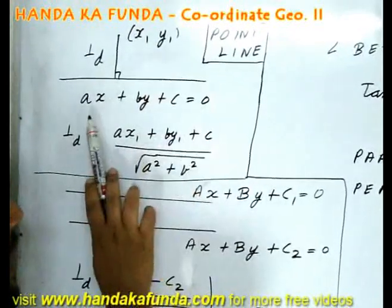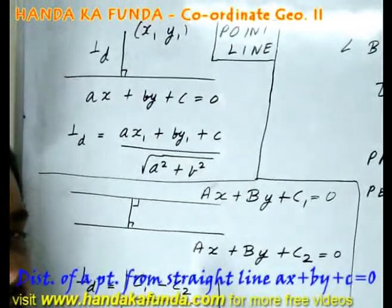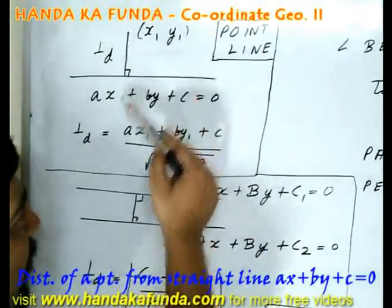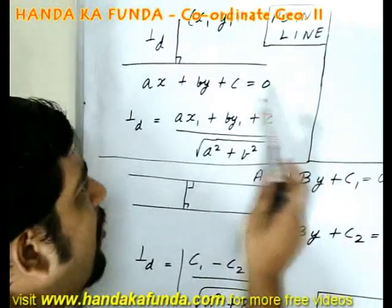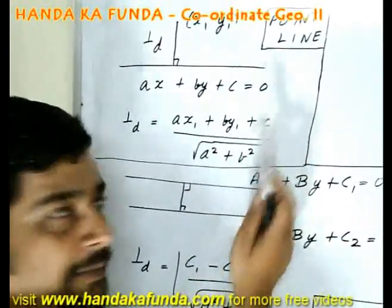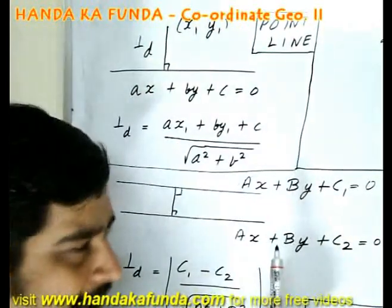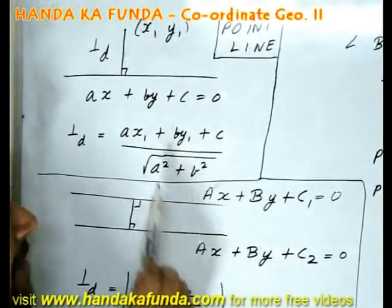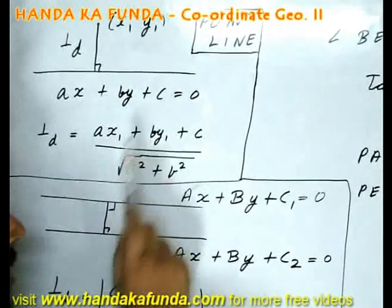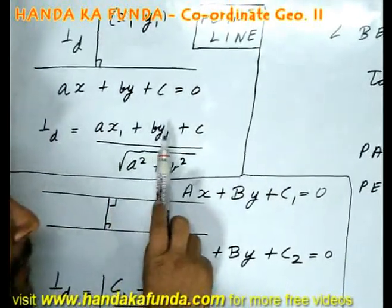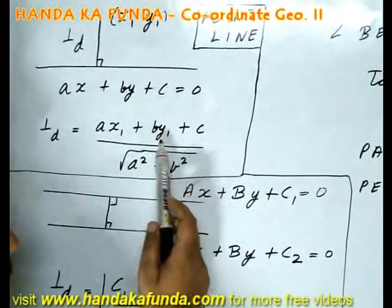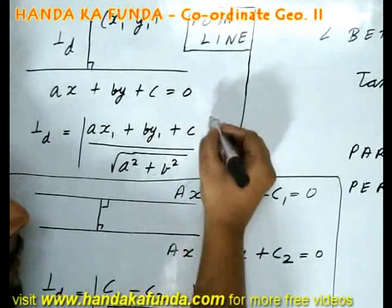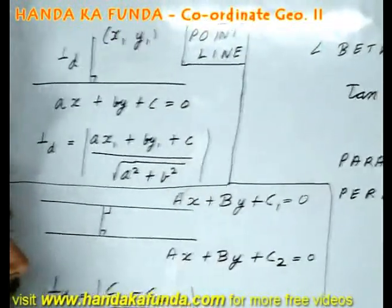Say I am given a point x1y1 and a line ax plus by plus c is equal to 0. If the point x1y1 lies on the line, that would mean when I put x1y1 in the equation of the line it will be equal to 0. That is ax1 plus by1 plus c will be equal to 0. If it does not lie on the line, then there will be a perpendicular distance between the two. That can be found by putting x1y1 in the equation of the line: ax1 plus by1 plus c, which has to be non-zero, divided by square root of a square plus b square. Since it is a distance, it has to be the mod, or it has to be a positive quantity.